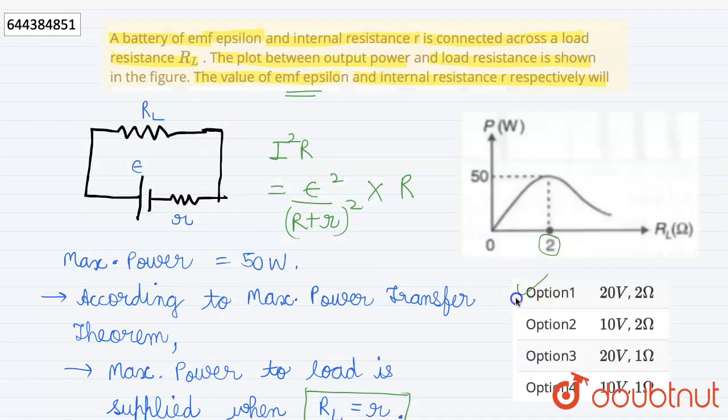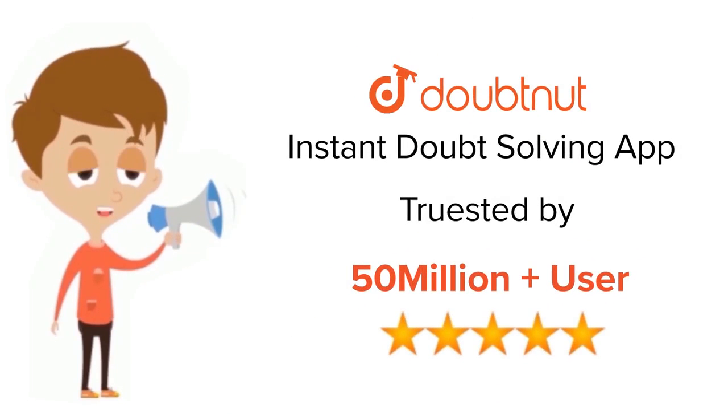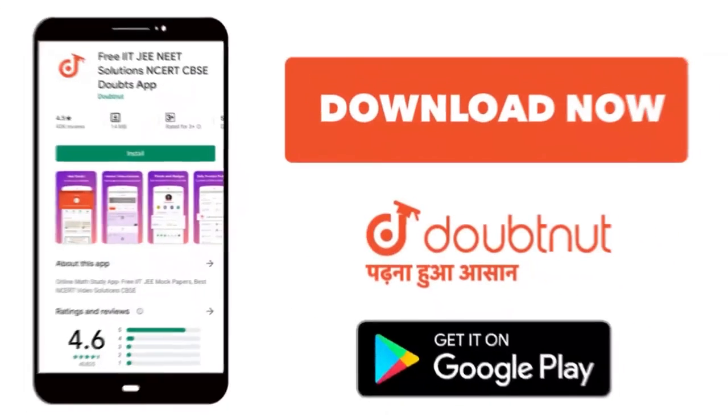So in our option, 20 volts and 2 ohm is the correct option. Thank you. So for class 6 to 12, IIT JEE and NEET level, trusted by more than 5 crore students, download Doubtnet.